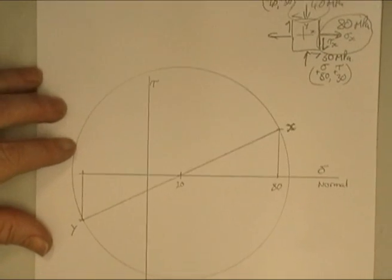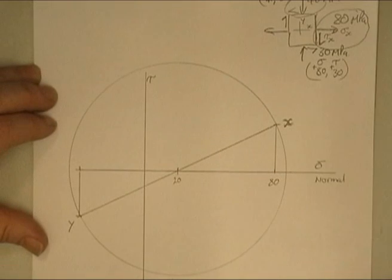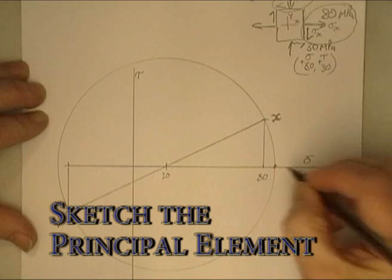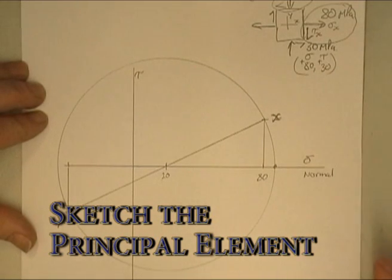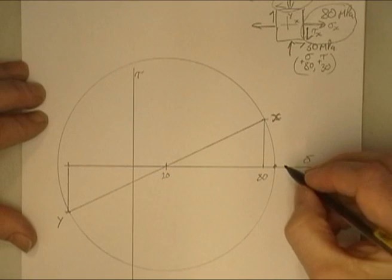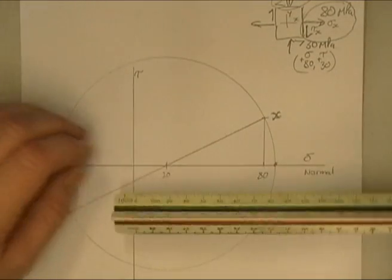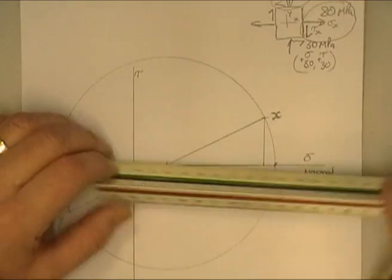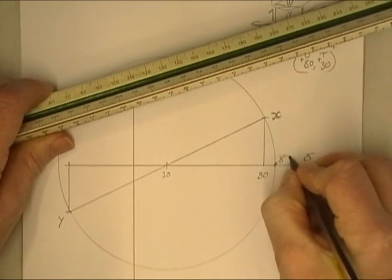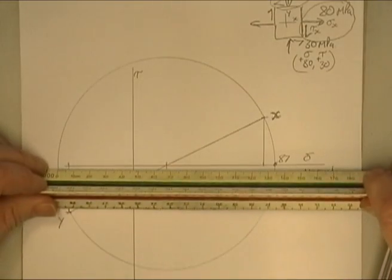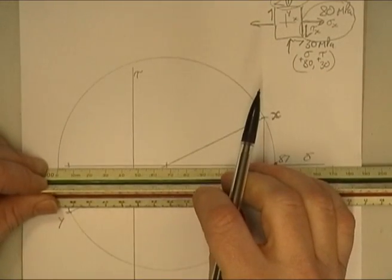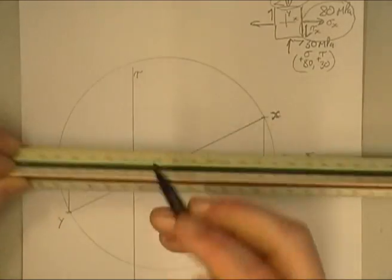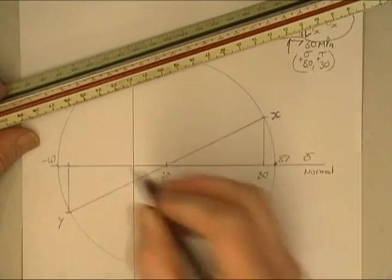The first thing we now want to find is our principal stress. Principal stresses occur here — this is my maximum tensile stress, measured across this way. This point we can read off will be at 87 megapascals, and my minimum stress will be at this side at minus 47.